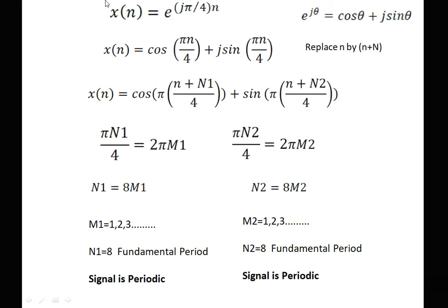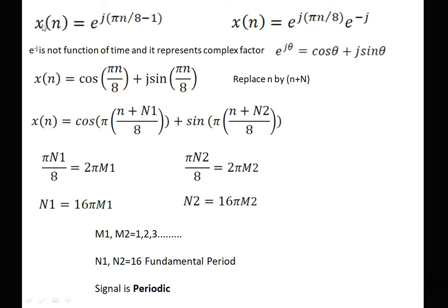Next: x(n) = e^(jπn/4). Using Euler's formula e^(jθ) = cos(θ) + j·sin(θ), we expand to x(n) = cos(πn/4) + j·sin(πn/4). We assign N₁ to the cosine part and N₂ to the sine part. Solving πN₁/4 = 2πm₁ gives N₁ = 8m₁, and πN₂/4 = 2πm₂ gives N₂ = 8m₂ — both positive integers with fundamental period 8. Therefore the signal is periodic in nature.